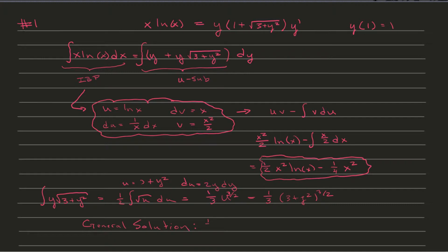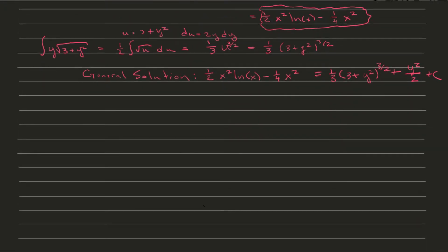Putting everything together, along with the integral for y, we have our general solution: (1/2)x² ln(x) minus (1/4)x² equals (1/3)(3 + y²)^(3/2) plus y²/2 plus C. This is the general solution to our differential equation, but we are not done yet because we have an initial value.